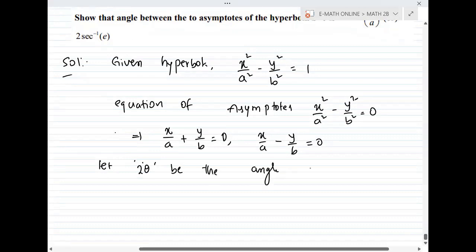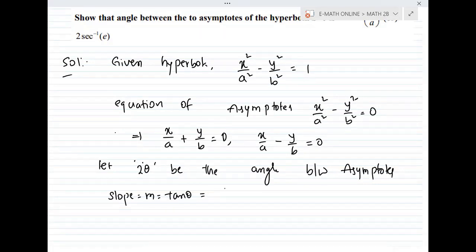Let 2θ be the angle between asymptotes. Then slope equals m equals tan θ, which equals b/a from the asymptote equation.